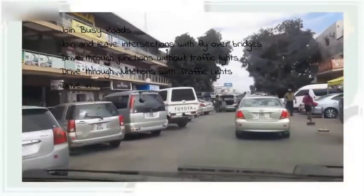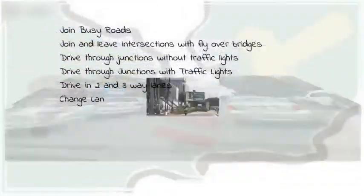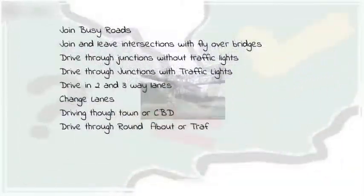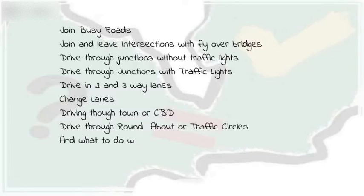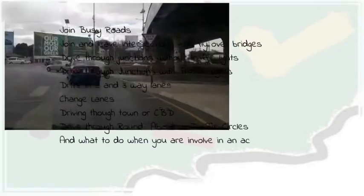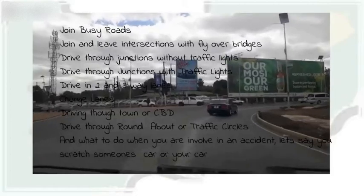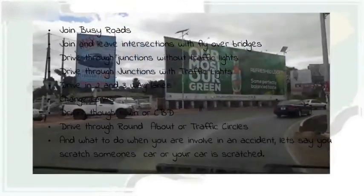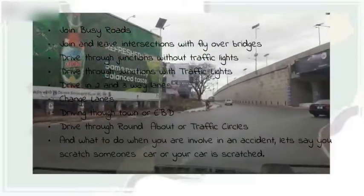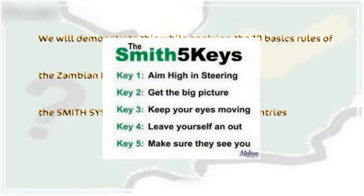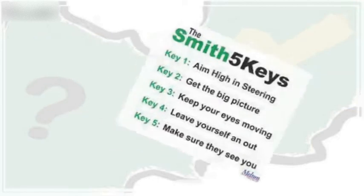We will look at how to join busy roads, join and leave intersections with flyover bridges, drive through junctions without traffic lights, drive through junctions with traffic lights, driving two and three-way lanes, how to change lanes, how to drive through town or CBD, how to drive through roundabouts or traffic circles, and what to do when you are involved in an accident. While demonstrating, we will be applying the 10 basic rules of the Zambia Highway Code and the Smith System mainly used in western countries.